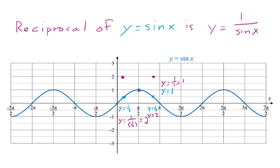The same applies to the next point with a y value of 1 half on the sine curve — the reciprocal has a y value of 2 for this as well. Now, the sine curve passes through the origin, where both x and y are 0. 1 over 0 is not defined, so the reciprocal does not have a point with an x value of 0. Instead, it has a vertical asymptote. The reciprocal curve does not touch or cross the asymptote — it approaches it, but does not touch. The same thing happens where x is pi: the y value is 0, so 1 over the y value does not exist, and we get another asymptote.